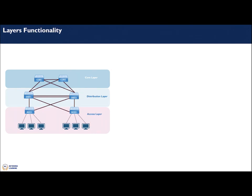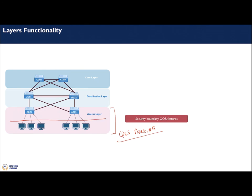Looking at the functionalities for each layer, starting with the access layer: this is your security perimeter, your secure boundary, and where you very often have your quality of service marking. You need to mark packets coming in because you don't trust what happens beyond this point, so this is where you do QoS marking. This layer also has your access lists and is very rich in features.